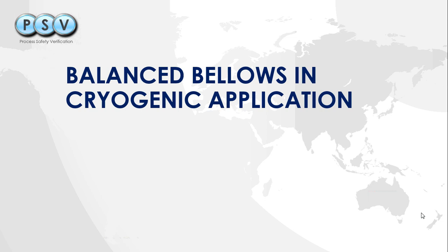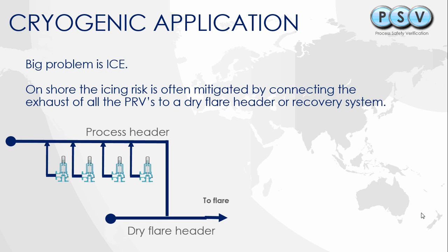Cryogenic application presents one large problem for pressure relief, and that big problem is ice. Any leakage past the valve, if it comes into contact with moisture, will cause ice. This may happen on the valve side or further down in the exhaust system.